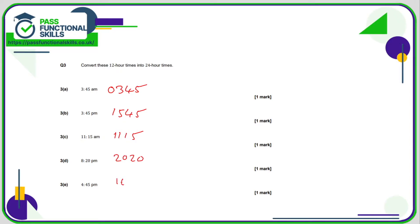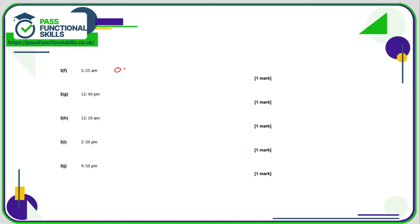5:25 am — as it's am and a single digit, we put a zero in front: 05:25. 12:40 pm: we only add 12 from 1 o'clock onwards, so 12:40 stays as 12:40. 12:10 am — remember midnight is 00:00, so 10 past midnight is 00:10. 2:30 pm becomes 14:30. 9:50 pm: adding 12 to 9 gives 21:50.